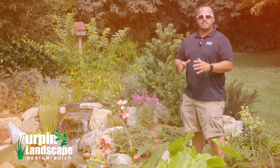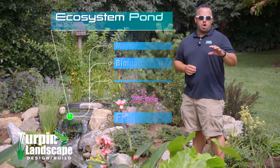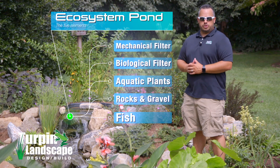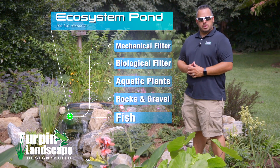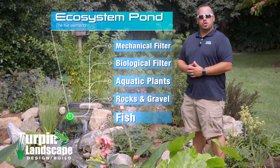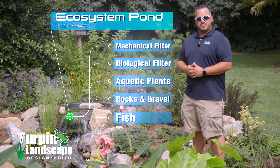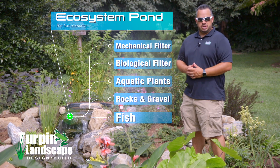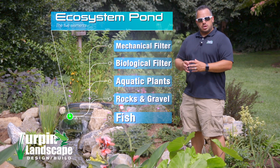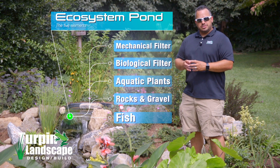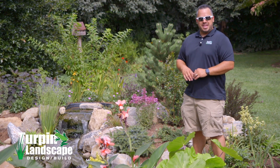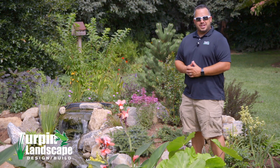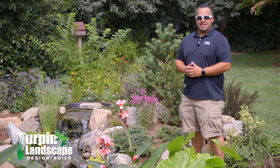There are five elements to an ecosystem pond: our mechanical filter, our biological filter, our aquatic plants, rocks and gravel, and fish. If all of those components are put together the correct way, you will develop a low maintenance system — and my favorite part is it'll look very natural.